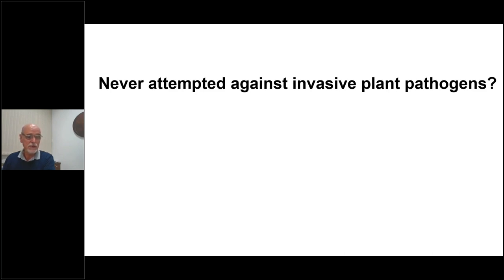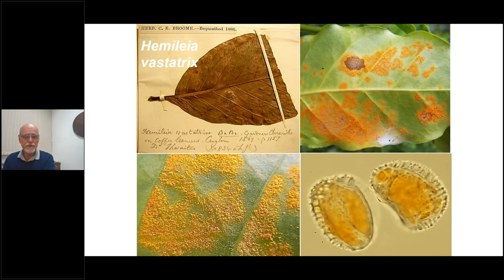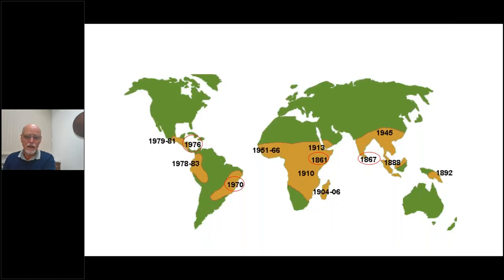We decided to address this — we are biocontrol scientists. The first target we chose was Hemileia vastatrix, the worst disease of coffee, well known throughout the world. Coffee is one of the top agricultural commodities, and Hemileia vastatrix devastated the coffee plantations in the 19th century in Ceylon — now Sri Lanka. The rust was first known to occur in Africa and spread all over the world.